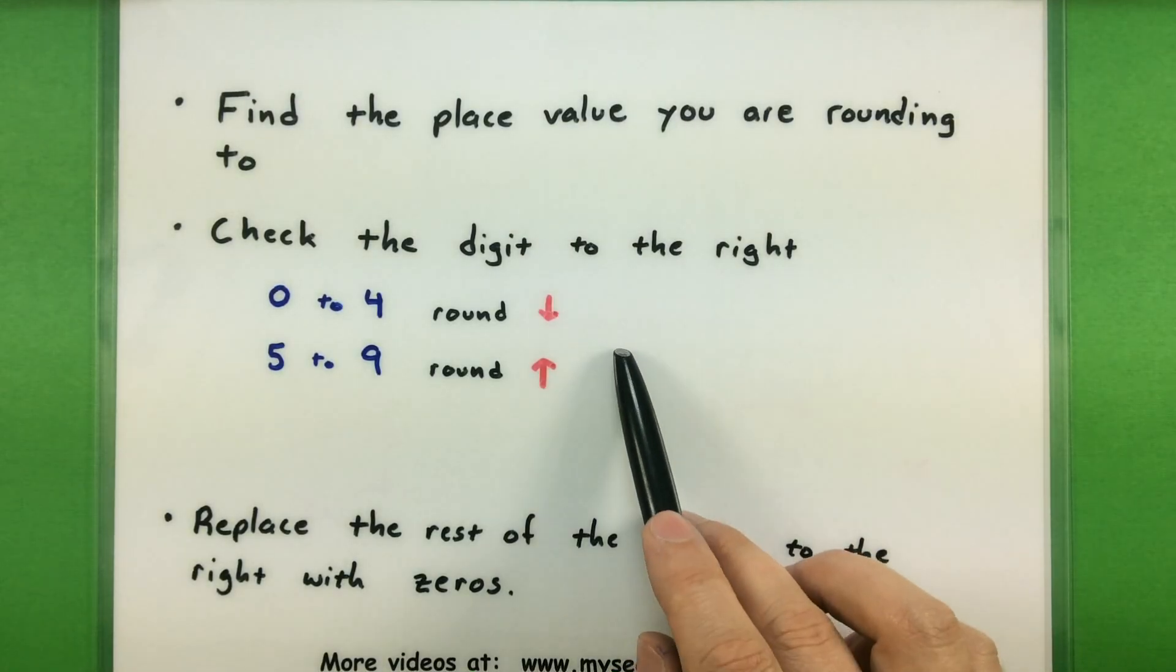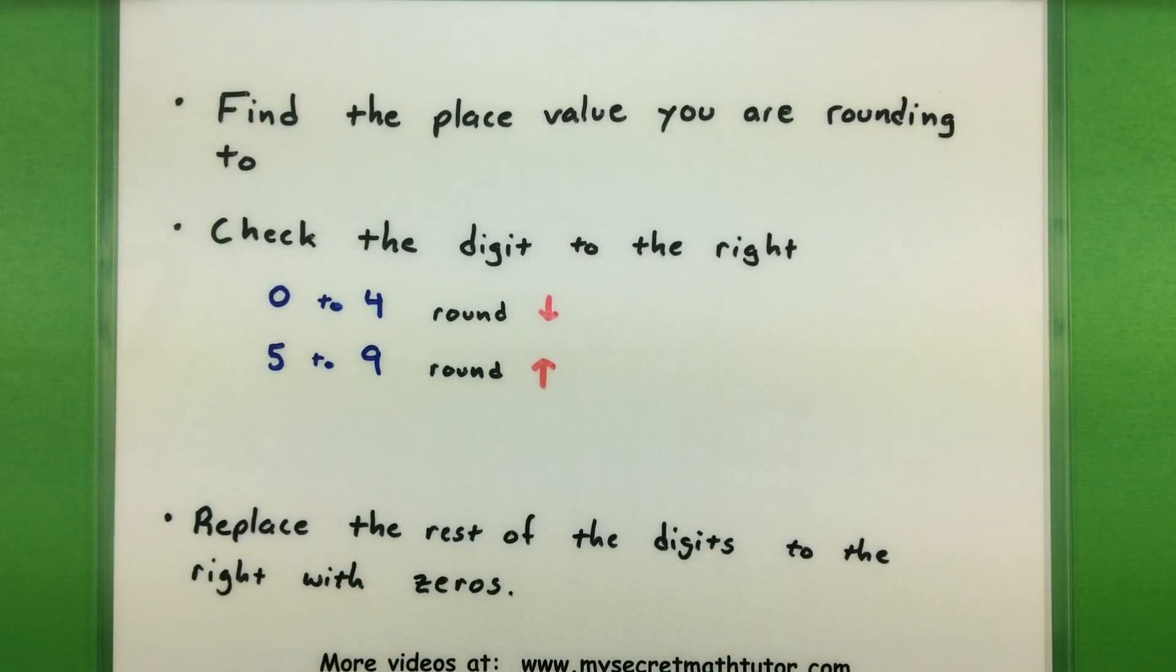Next, you're going to check the digit to the right to see how big that one is. If it's zero through four, you want to round your number down, and if it's five through nine, you want to round it up. In the rounding down process, you essentially keep the number the same and make all the rest of them zeros. In the rounding up process, you actually change your number in the place value you're interested in to the next highest number.